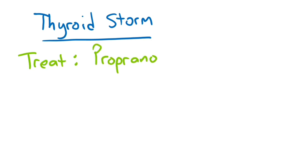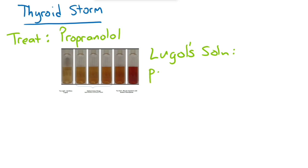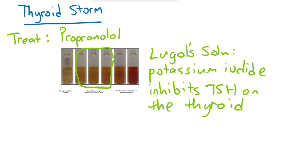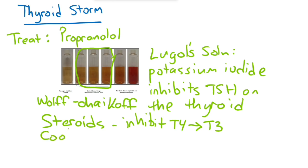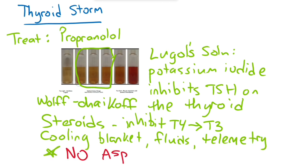Thyroid storm is treated with beta blockers like propranolol and Lugol solution which is potassium iodine that inhibits TSH action on the thyroid, which seems a little backwards since it contains iodide. This is actually called the Wolf-Chaikoff effect. Sometimes steroids are used to inhibit conversion of T4 to T3. Thyroid storm patients need cooling blankets, fluid resuscitation, and careful monitoring on telemetry in the hospital. Interestingly, aspirin is contraindicated in thyroid storm because it increases unbound T3 and T4 making the storm worse.